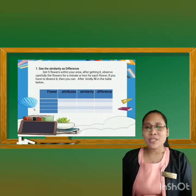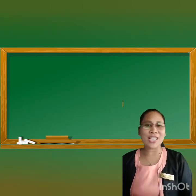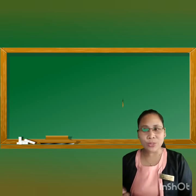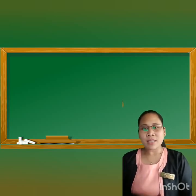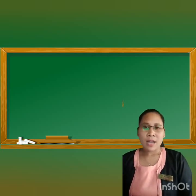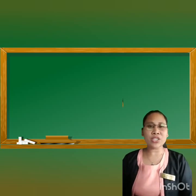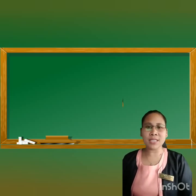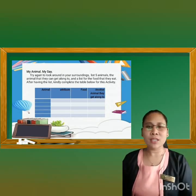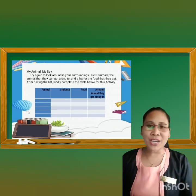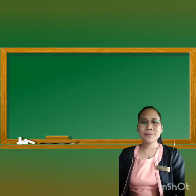I think you are done with your activity. Now we have another activity called 'My Animal My Say.' What you are going to do is look around in your surroundings, list five animals that you can observe, and list the food that they eat. After that, kindly complete the table below. The instructions will be shown on the screen so you can read and understand easily. You may start now. Are you all done? Did you enjoy your activity?